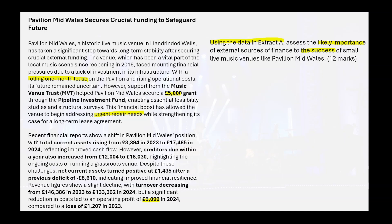We've got our context, which is obviously the Pavilion Mid Wales. External sources of finance - I'm not just going to define that in a textbook style, because I'm not going to mention all those external sources of finance. I don't think friends and family and stuff like that are going to be that important to this question, because it's not mentioned in the case study. But grants are, and I know in this case the grant also comes with help. We've got the name of the grant here, which is the Pipeline Investment Fund, if needed.